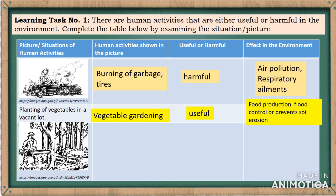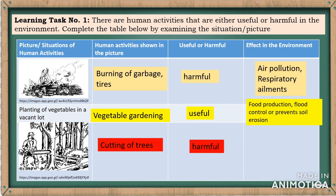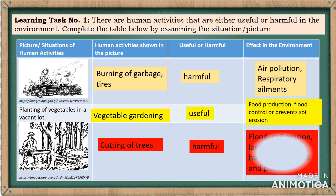For the last picture, the human activity shown is cutting of trees. This is harmful. The effects on the environment are floods, soil erosion, landslides, and loss of habitat for animals and plants.